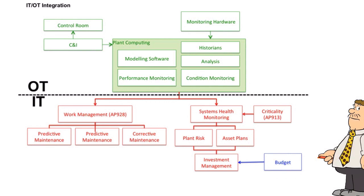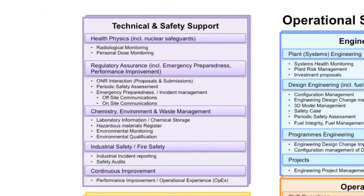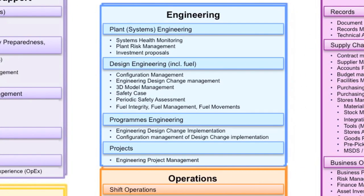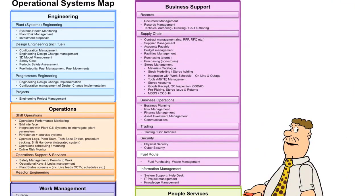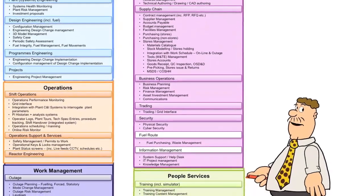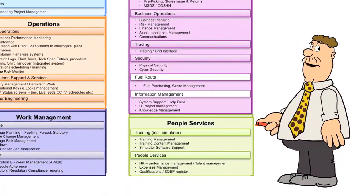Returning to the main diagram: up here in technical and safety support we have the specialist areas of health physics, regulatory assurance, chemistry, nuclear safety, industrial safety and continuous improvement. Over here is engineering, and hidden in this section is engineering design change management. Over on the right-hand side we have business support: document management, supply chain, business management, risk management, trading, security, and other areas including managing the people assets.